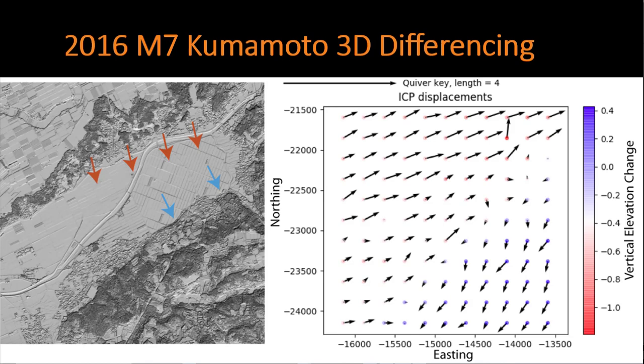These maps of 3D displacement are important for determining earthquake size, the sense of motion, the amount of slip along the fault plane, and ultimately constraining seismic hazard. So how can we perform this 3D differencing? Let's go to OpenTopography.